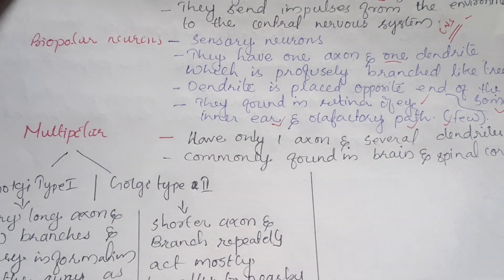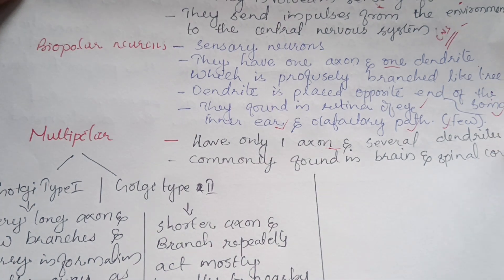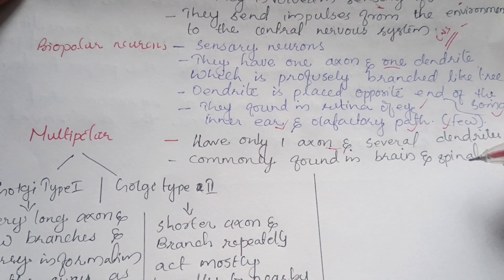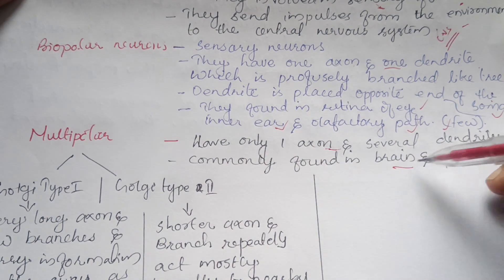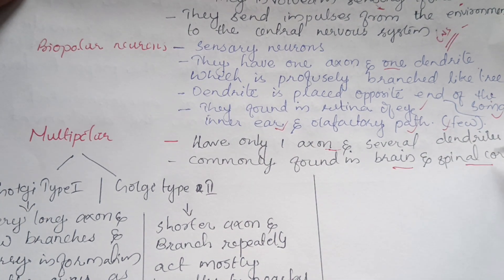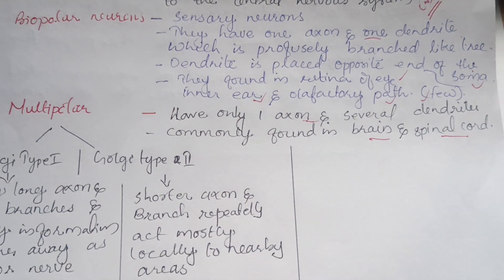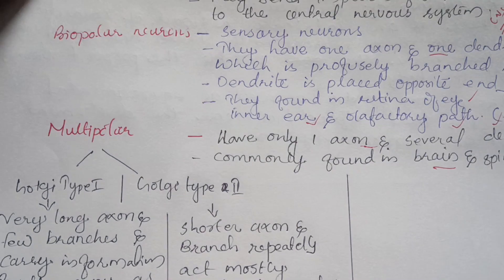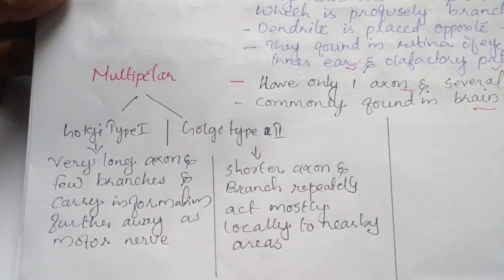The Multipolar Neuron has only one axon and several dendrites. It is commonly found in the brain and spinal cord. The spinal cord neurons are also included in this category.